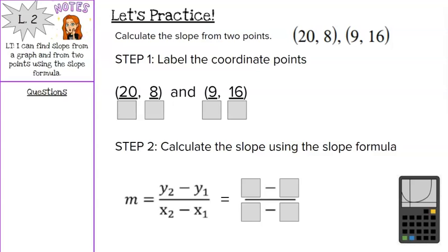So first off, we're going to learn how to calculate our slope from two points. So our coordinate points are (20, 8) and (9, 16). So we could graph the points and then do rise over run. But instead, to save a step, we can just use our slope formula, which is right here.